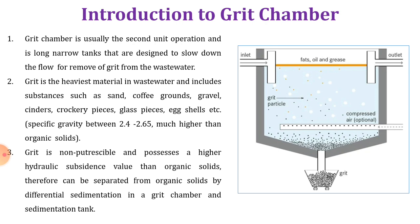The specific gravity of grit is between 2.4 to 2.65, which is much higher than organic solids. Grit is non-perishable and possesses a higher hydraulic subsidence value than organic solids. Therefore, it can be separated from organic solids by differential sedimentation in the grit chamber and sedimentation tank. Being non-organic matter, it will not decompose easily and can be readily settled at the bottom and removed from the wastewater.